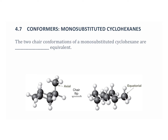If one of the hydrogen atoms in a cyclohexane is replaced by another substituent, like a CH3 shown here, the result is a monosubstituted cyclohexane.